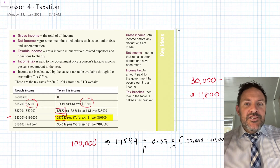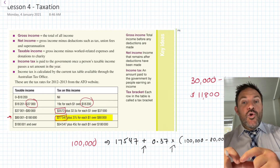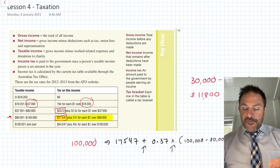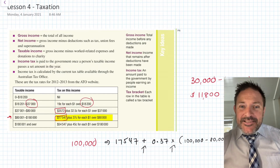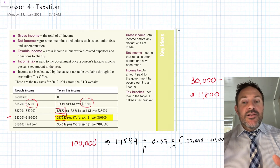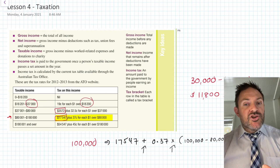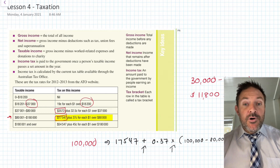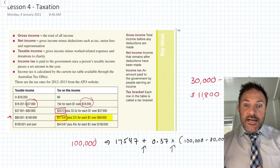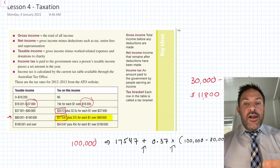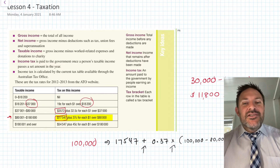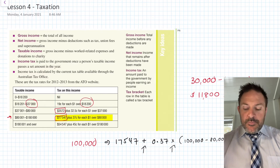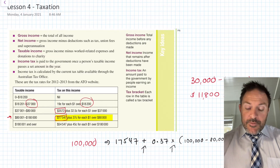Remember: the value you're calculating is the amount you have to pay the government. If you calculate more tax than what you earn, you've made a mistake — probably put a plus or times in the wrong spot. It should be roughly around 30% of your income, give or take, so use that as a sanity check.